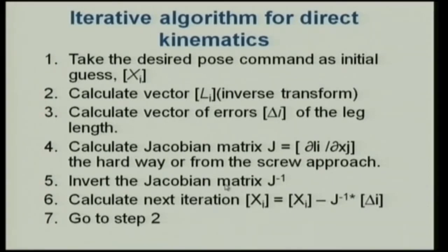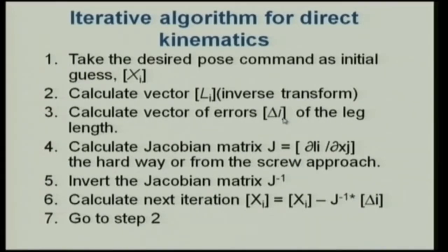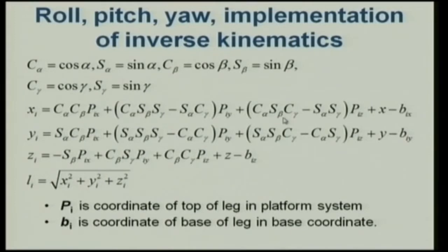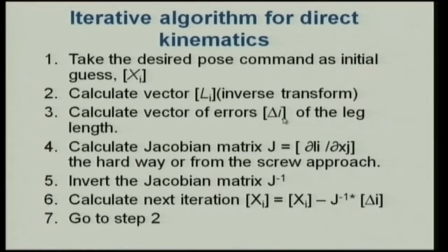You take the desired pose command as a vector, calculate the vector li using inverse transformations, then calculate the vector of errors delta_i in leg length. The problem of direct kinematics is: I know the leg lengths and want to find the end-effector pose. I assume a pose, compute the leg lengths from the inverse kinematics formula, and compare with the actual measured leg lengths.